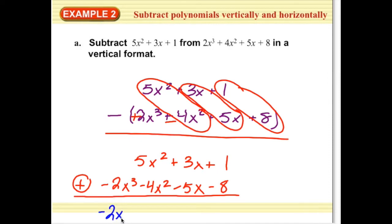So, negative 2x cubed, 5x squared and negative 4x squared is just 1x squared. Positive 3x and negative 5x is negative 2x. And 1 and negative 8 is negative 7. So that would be the same as 5x squared plus 3x plus 1 minus 2x cubed plus 4x squared plus 5x plus 8.